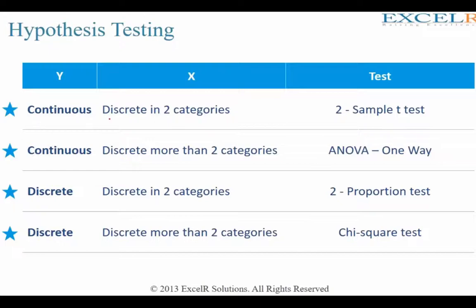If Y is continuous and X is discrete in two categories, you go with a two-sample t-test. If Y is continuous and X is discrete in more than two categories, we go with ANOVA one-way. We will also discuss two-way and multi-way ANOVA. If both Y and X are discrete and X has two categories, you proceed with a two-proportion test.